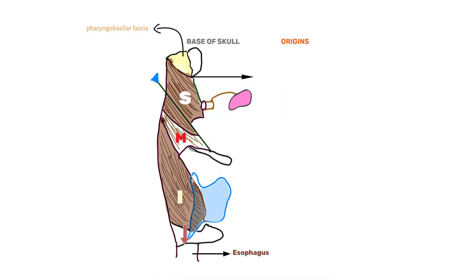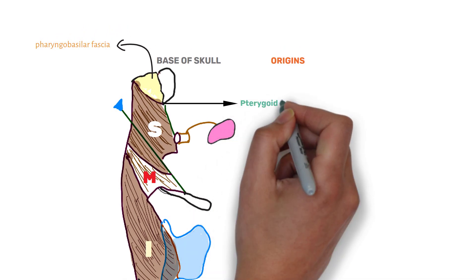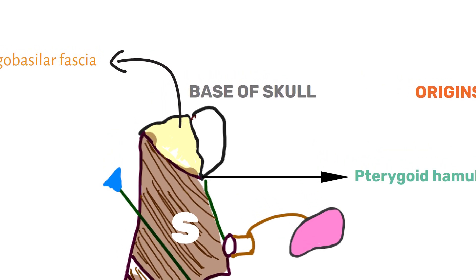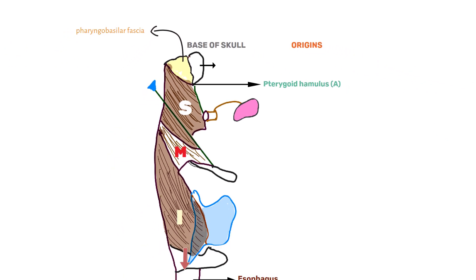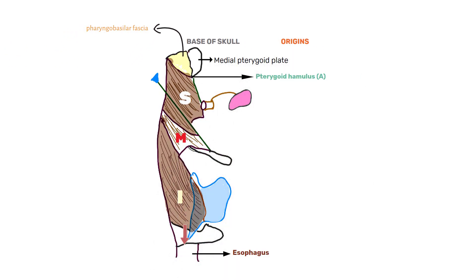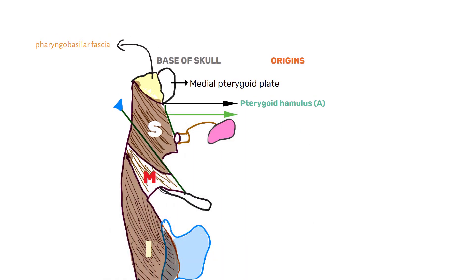Now let's see the superior constrictor muscle. It originates from: a) the pterygoid hamulus, a small hook-like projection of medial pterygoid plate; b) pterygomandibular raphe;